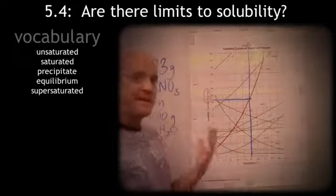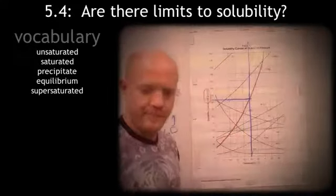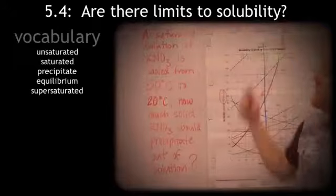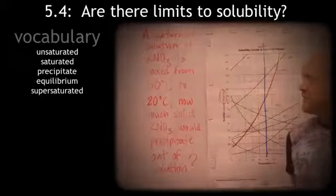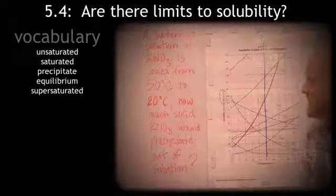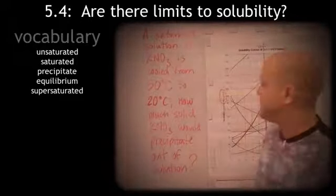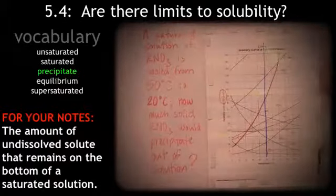Now, there's other ways of looking at this as well. It says, a saturated solution of potassium nitrate is cooled from 50 degrees to 20 degrees. How much solid, how much potassium nitrate solid would precipitate out of solution?